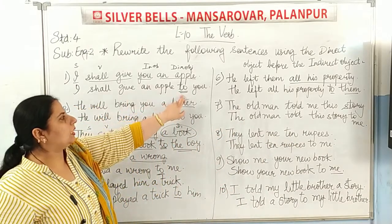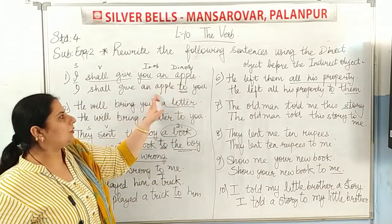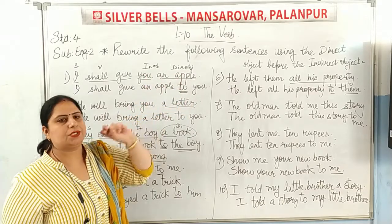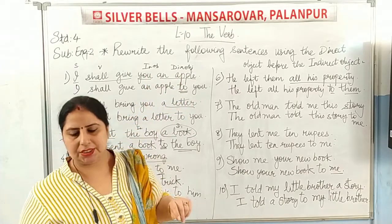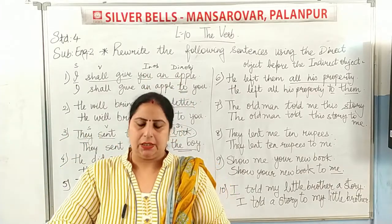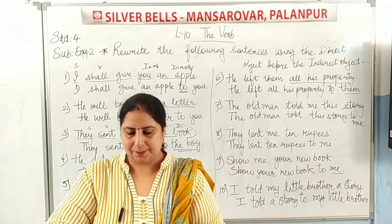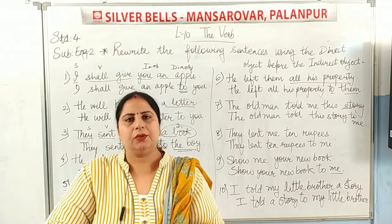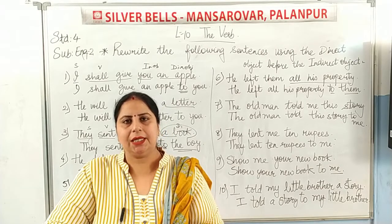So, by adding preposition 'to,' we bring the direct object forward and the indirect object to the back. With this, your exercise is completed. Write it in your own book in good handwriting. Thank you.